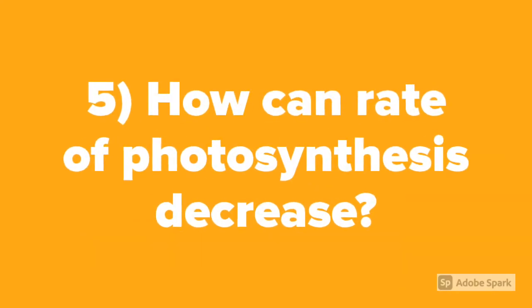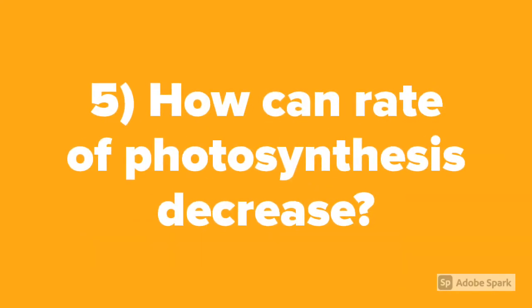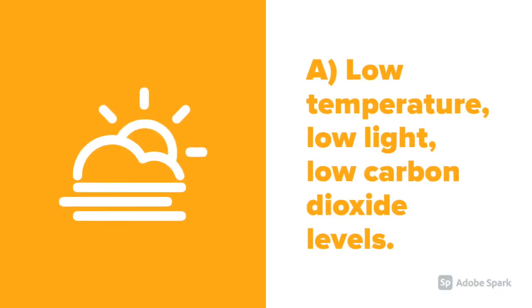Question number 5: How can the rate of photosynthesis decrease? Low temperature, low light, and low carbon dioxide levels can reduce the rate of photosynthesis.